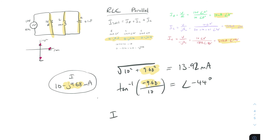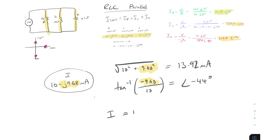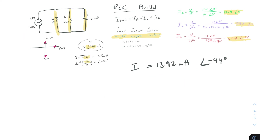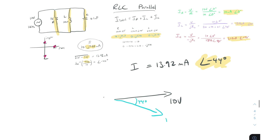Our total current is either 10 minus j9.68 milliamps in rectangular form, or more intuitively, 13.92 milliamps at a phase shift of minus 44 degrees. The total current is lagging the voltage by 44 degrees, so this circuit behaves inductively. On the phasor diagram, with the reference voltage at 10 volts, we draw the current at minus 44 degrees lagging, giving I equals 13.92 milliamps.